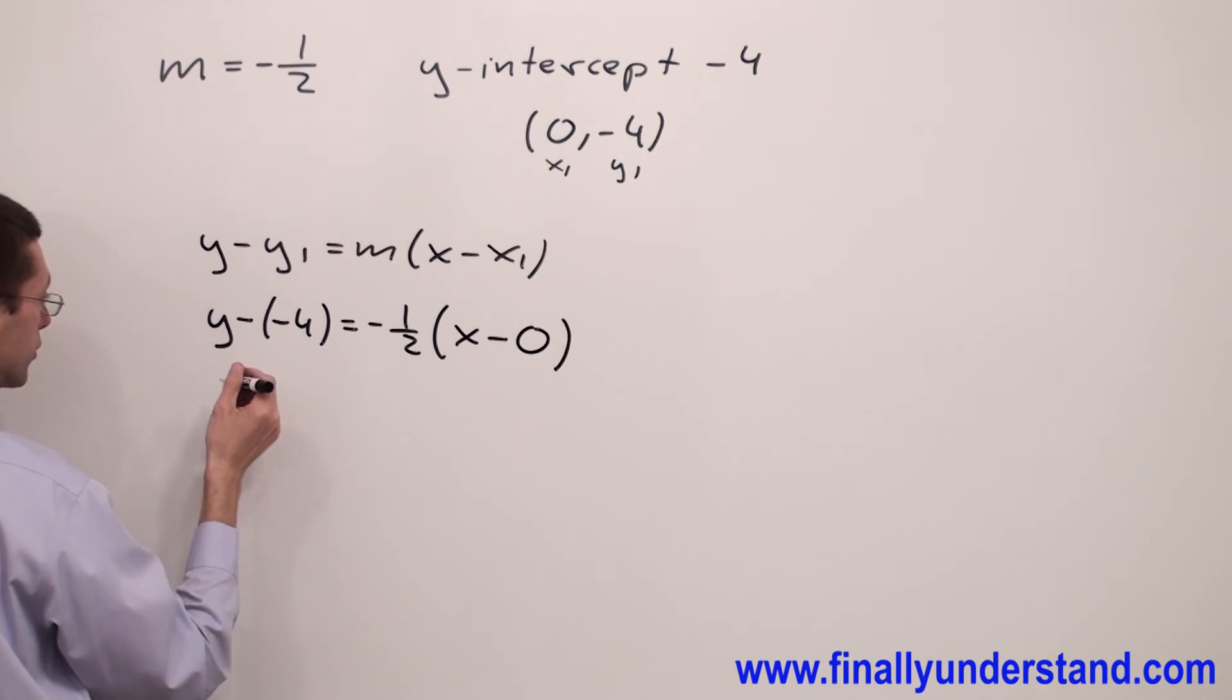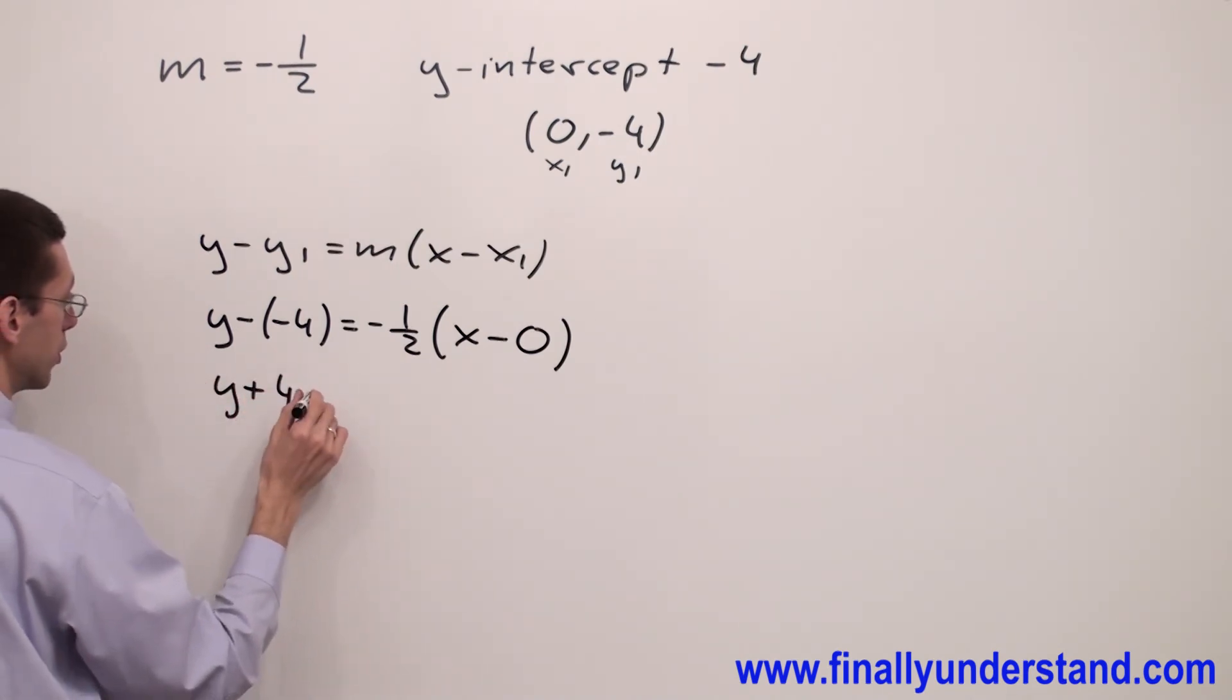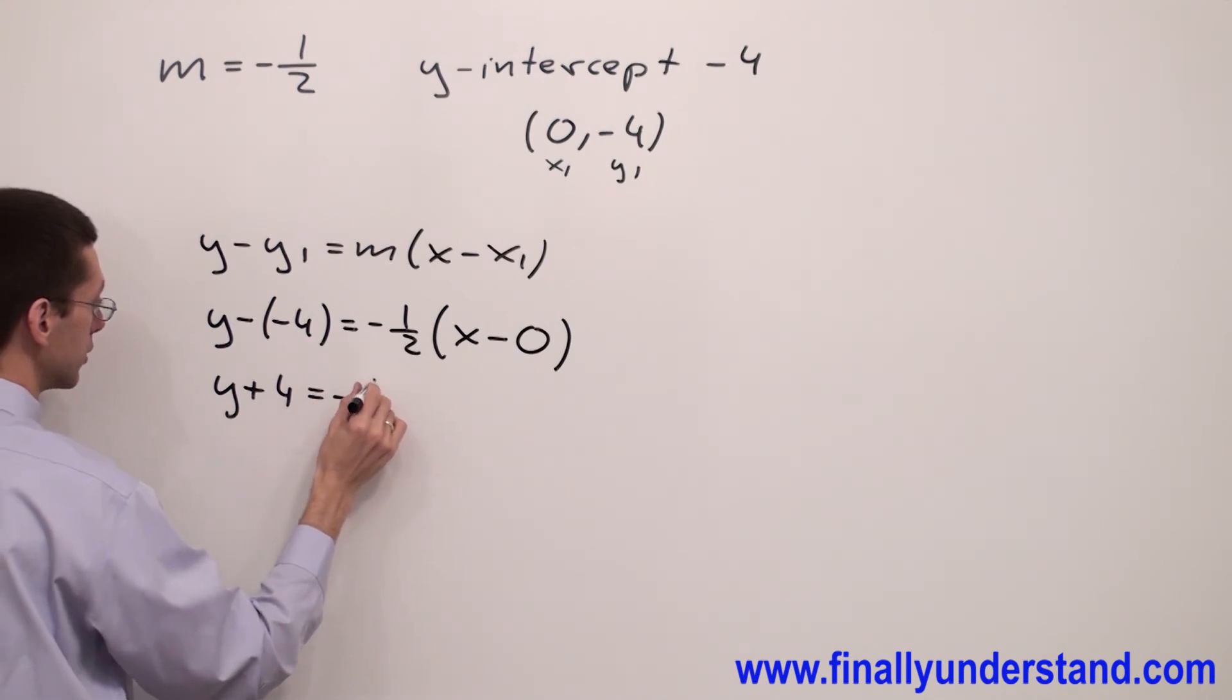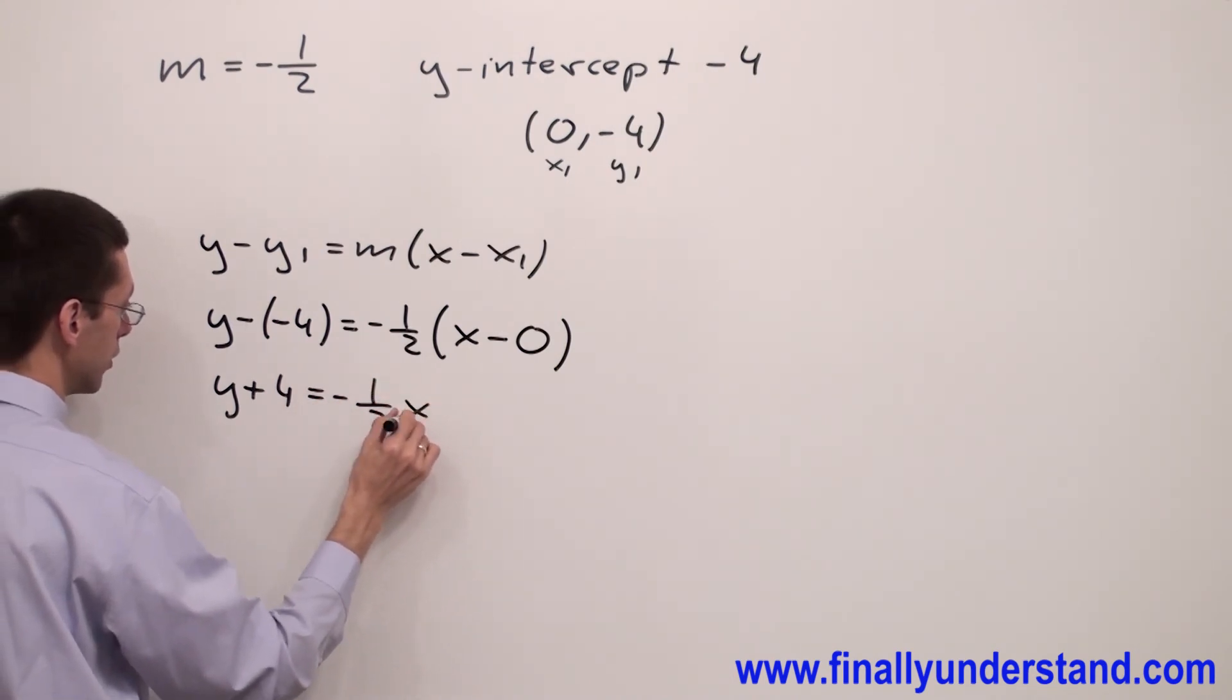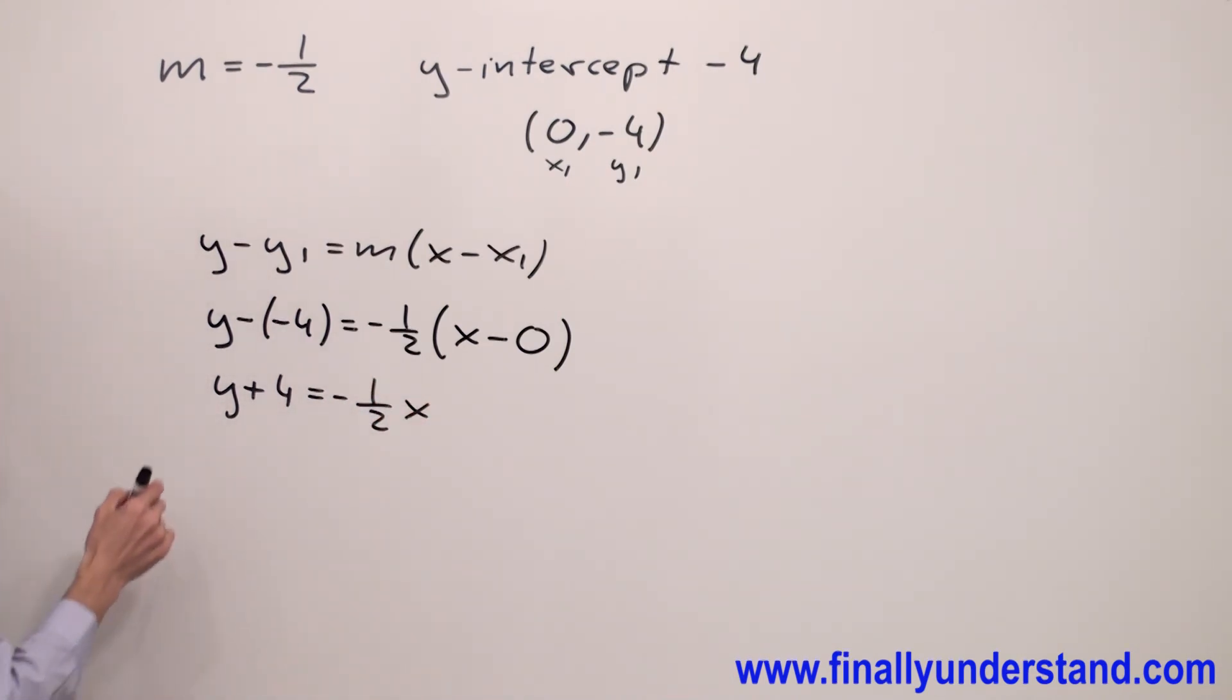Negative times negative gives me positive. So y plus four equals negative one half x. I have to solve this equation for y.